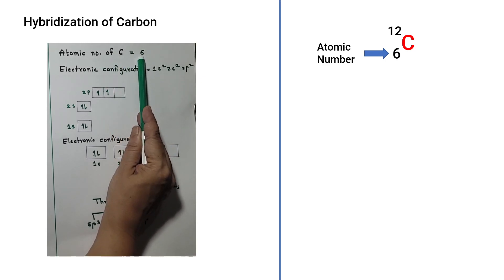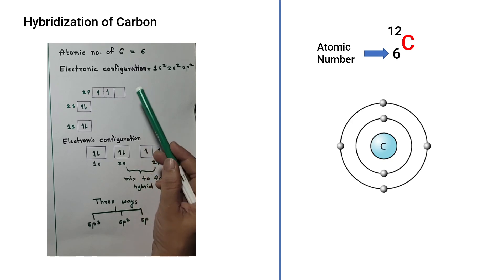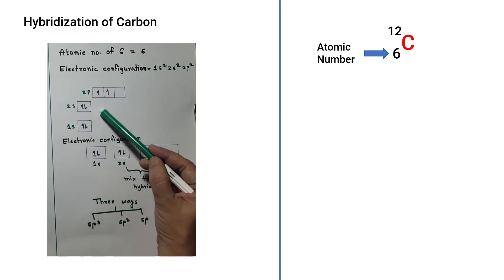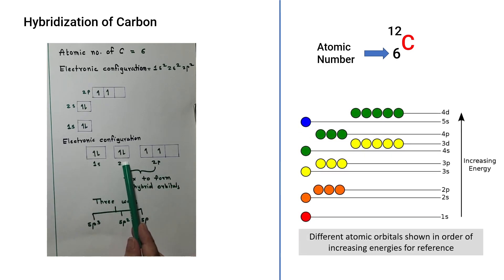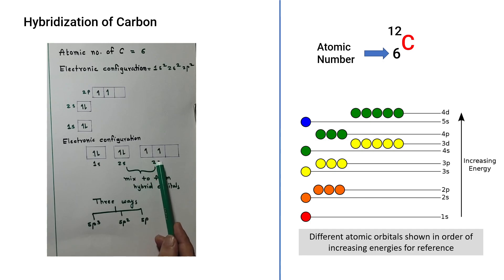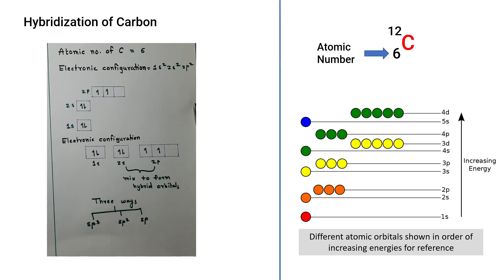The atomic number of carbon is six, meaning there are six electrons revolving around the nucleus. In carbon, the 2s and 2p orbitals are of nearly equal energies, so they can mix to form hybrid orbitals. This mixing takes place in three ways: sp3, sp2, and sp. Thus there are basically three types of hybridization of carbon, and we will discuss each in detail.